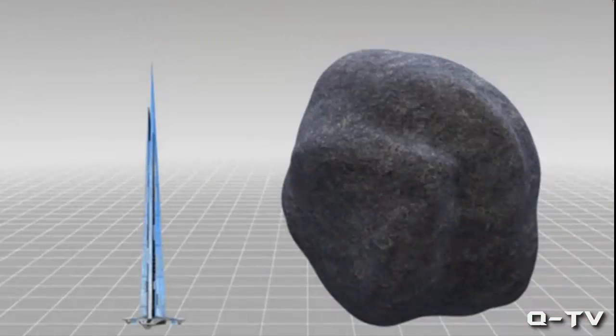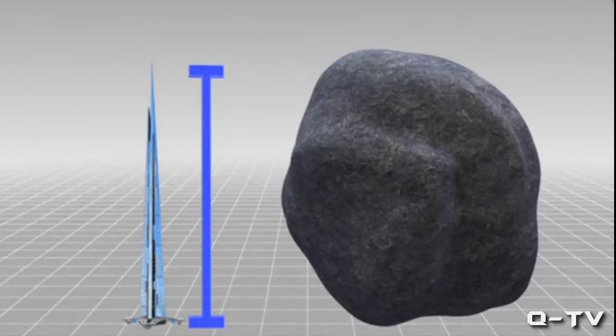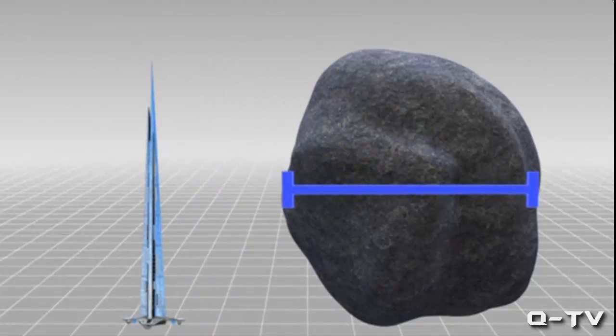Asteroid 2014 YB-35 is believed to be 1,000 meters wide, the same as the height of the Kingdom Tower currently under construction in Saudi Arabia.